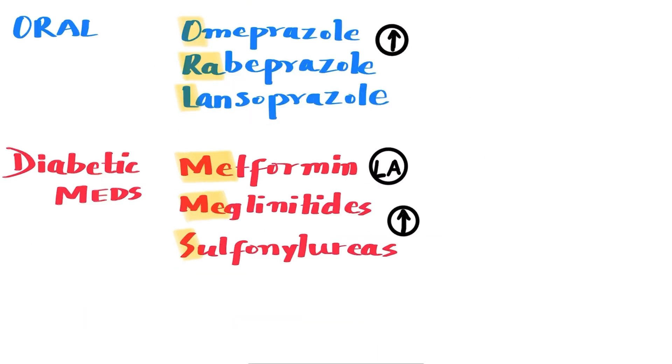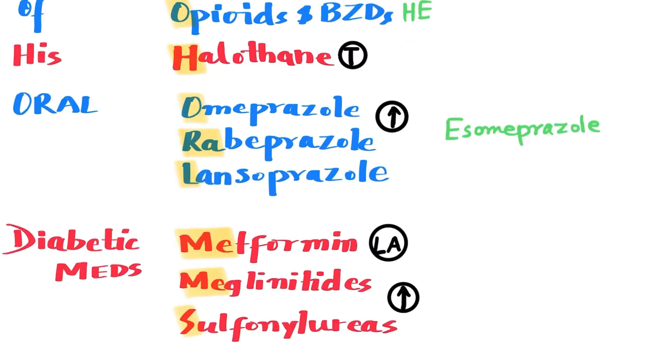Oral is to cover the PPIs or proton pump inhibitors that should be avoided in patients with cirrhosis. O is for omeprazole, RA is for rabeprazole, L is for lansoprazole. These medications are metabolized by the liver. A safer alternative PPI for cirrhotic patients is esomeprazole.